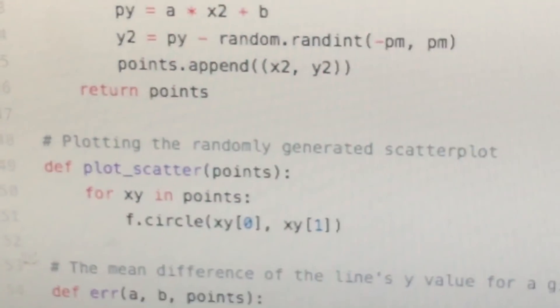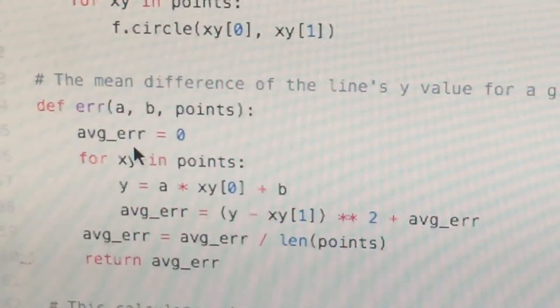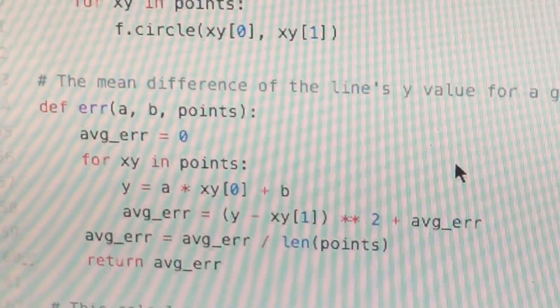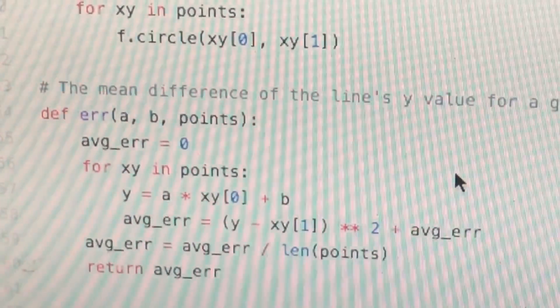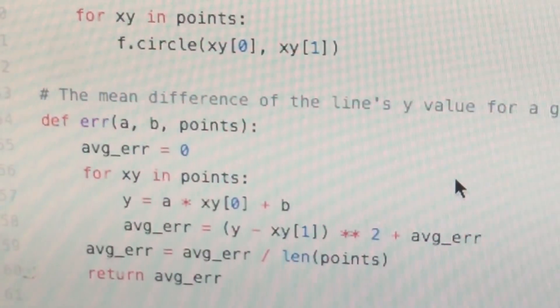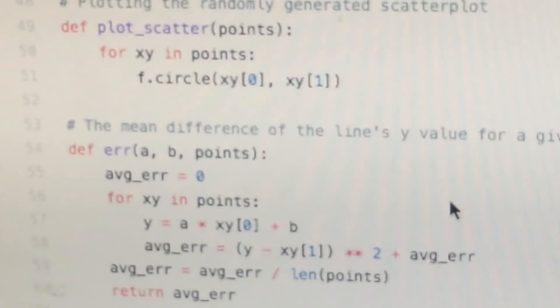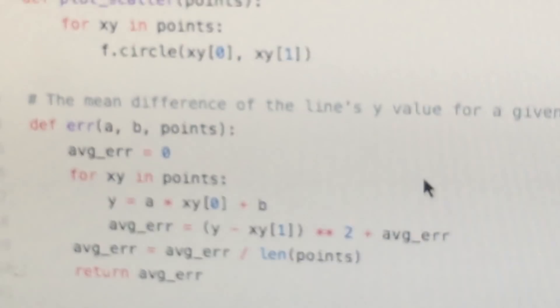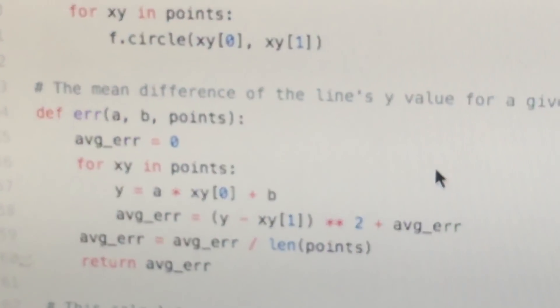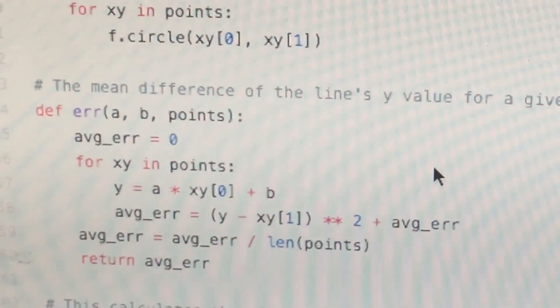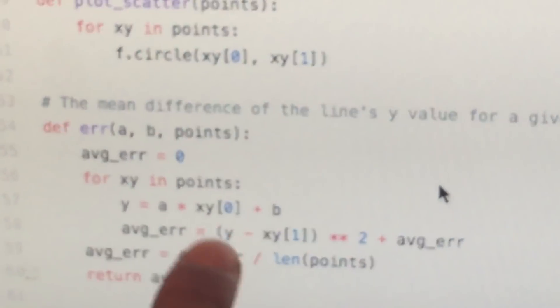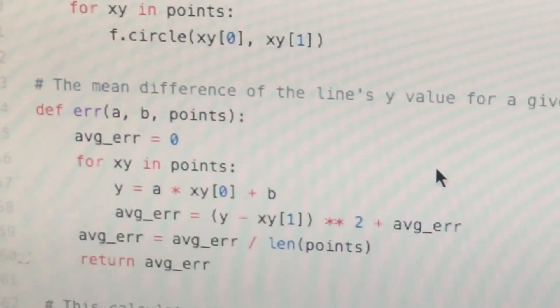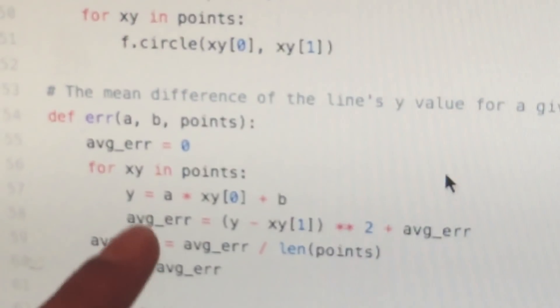This is how you figure out your error. So for XY in points you have a and b, and then you have points. So the Y is calculated from this point, the Y equals this of the X of that point, and then the average error equals this.